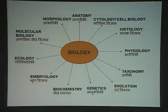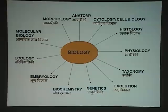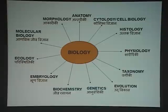Our taxonomy consists of two words: taxere plus normos. Taxere means to arrange, and normos means naming or nomenclature.